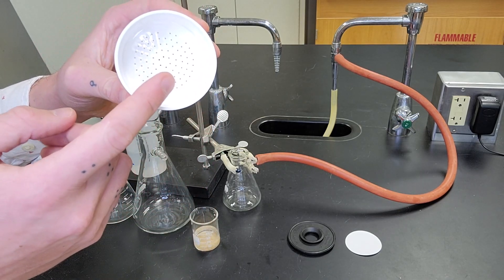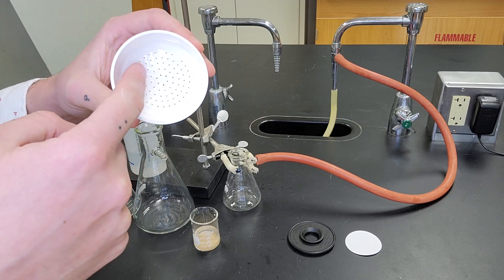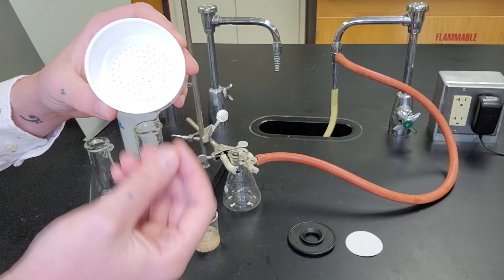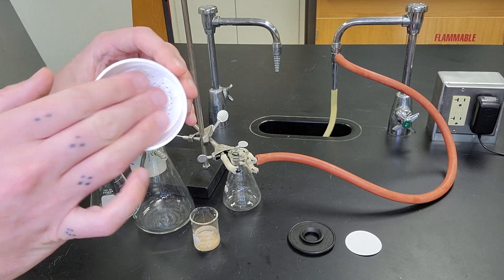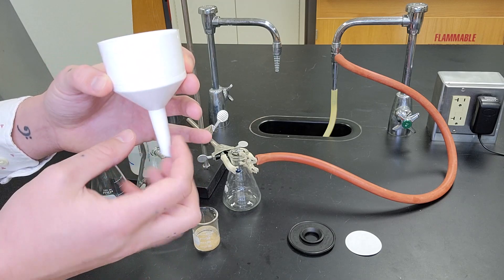But the difference is it's got little holes at the bottom of the top filter part, and this is actually where the vacuum is going to be pulled. By putting a filter paper on top of these little holes, we can leave the solid behind and pull through all of the liquid.